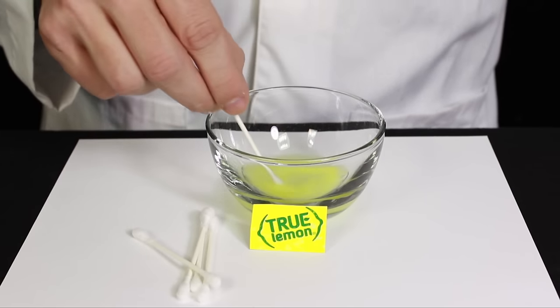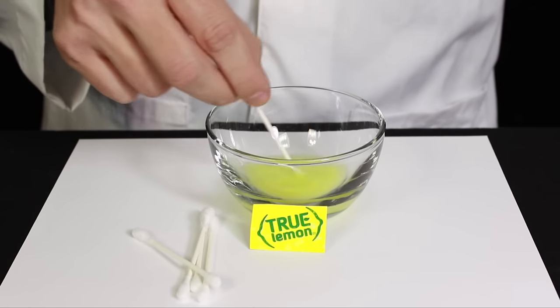And there you have it, how to make invisible ink using lemon juice. If you enjoyed this video, consider subscribing to Bearded Science Guy, or check out some of my other weekly science videos.